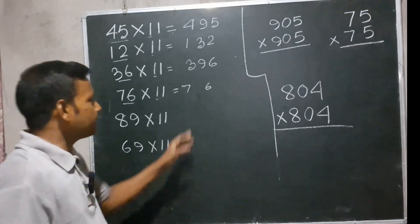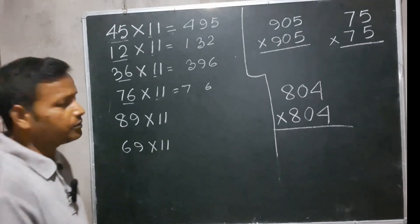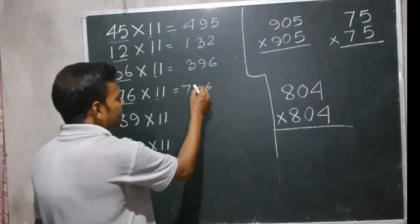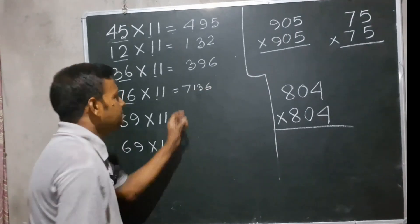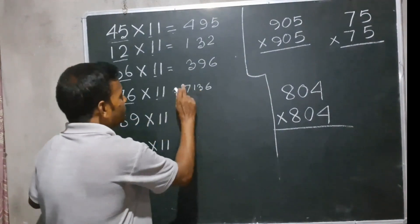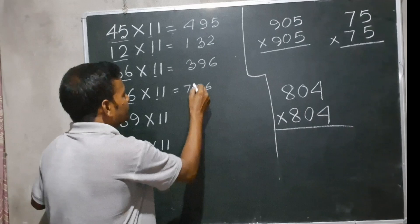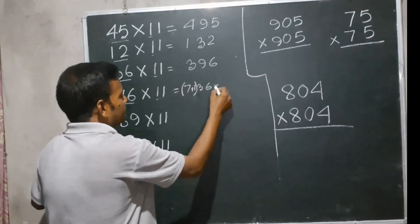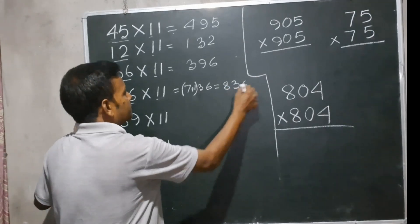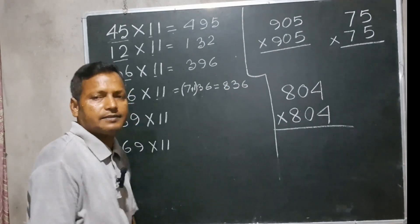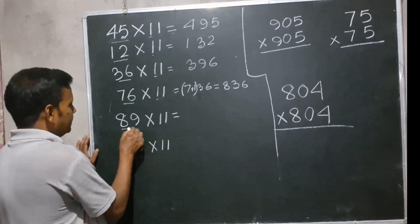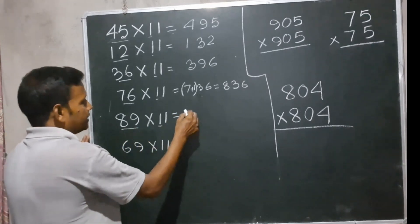76 into 11. We have to add 7 and 6, which gives 13, so 836. Now next one, 89 into 11. 89 ones are 89, similar process.